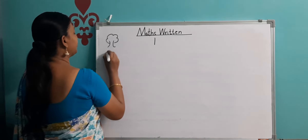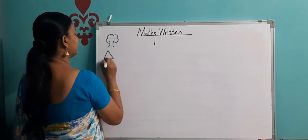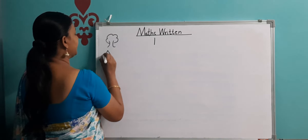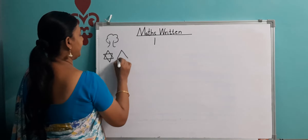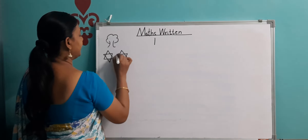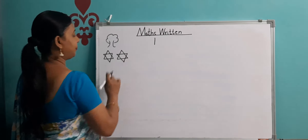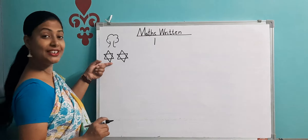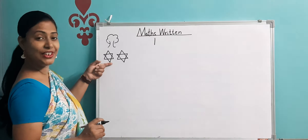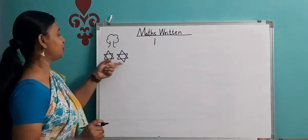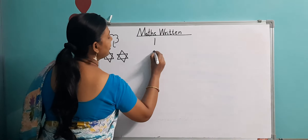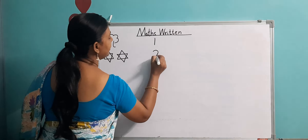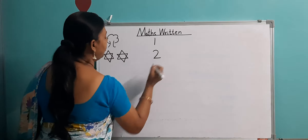Now can you see this? What is this? We will count it. These are stars. So how many stars are here? One, two. Here are two stars. So I will write here — two.